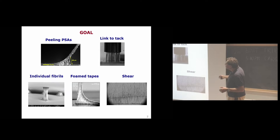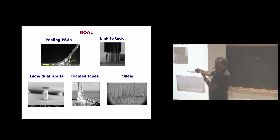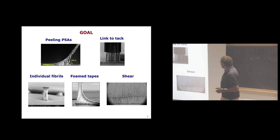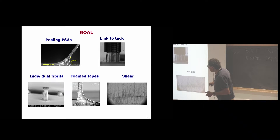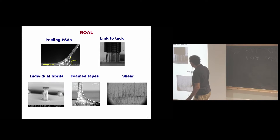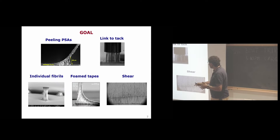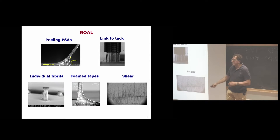The aim is to understand soft adhesive systems. When peeling soft adhesives, you no longer see a clean crack front — you have large fibrils and instabilities. Under a microscope, you can recognize interference fringes. You can have very large strains, and what would be a sharp crack in the undeformed state is now wide open. In a shear test, where there should be no cavities, we still see them.